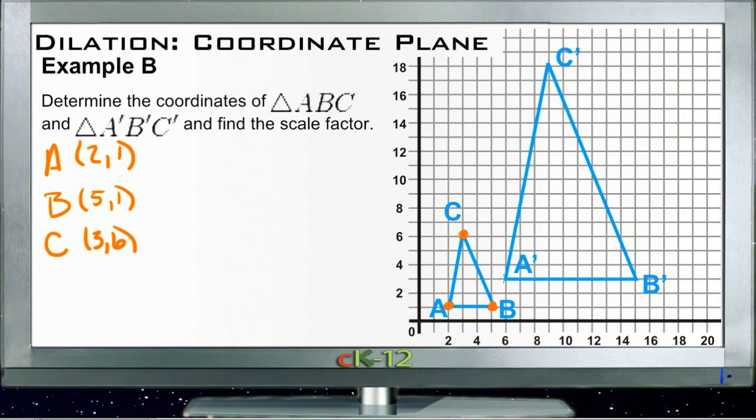And then for A prime B prime C prime, we have A prime at (6, 3), B prime is (15, 3), and C prime is at (9, 18). So there's the coordinates—that's that first part, determine the coordinates.